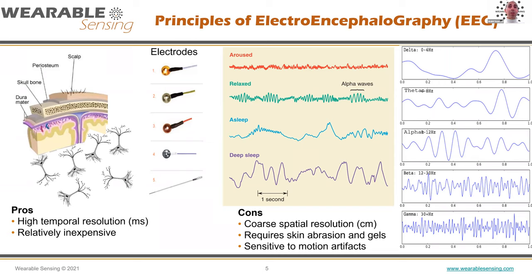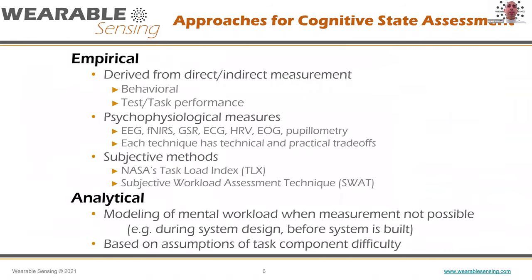That's the EEG 101 course. Now let's talk about cognitive states. A cognitive state, at the most basic level, is a state of your brain when it's doing a particular task — working hard or not so hard. That would be called workload. Engagement is when we are attending to something or not attending to something — people call that attention.